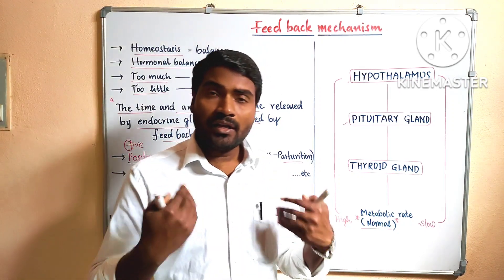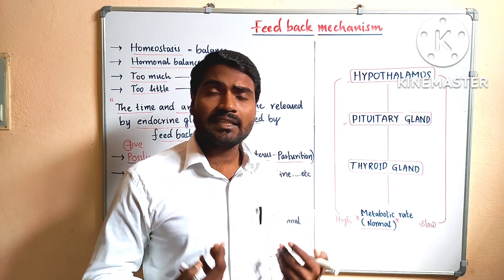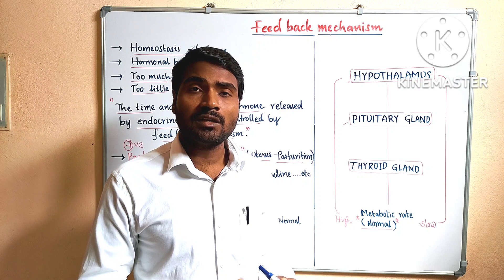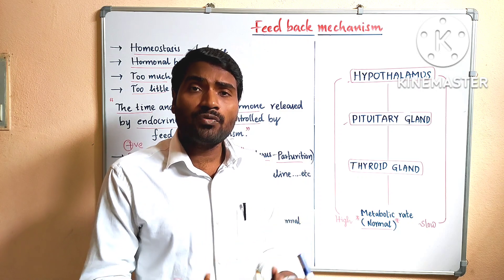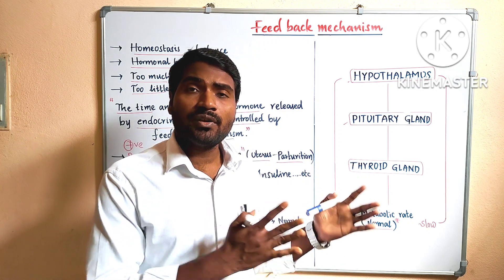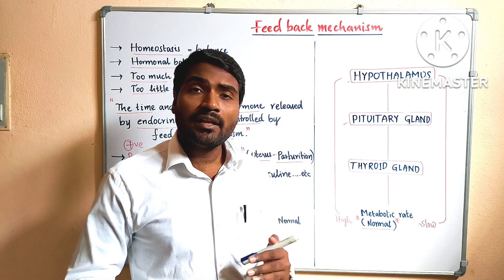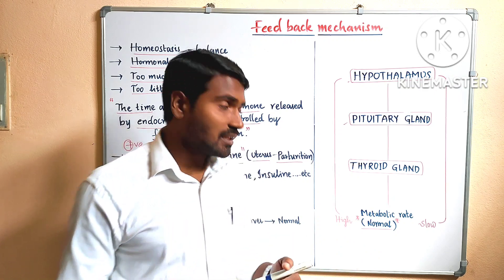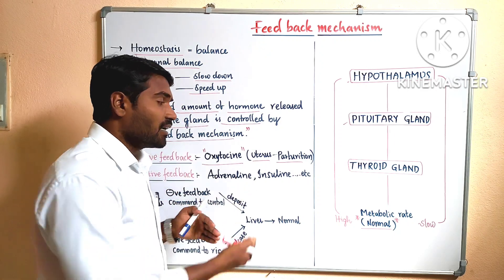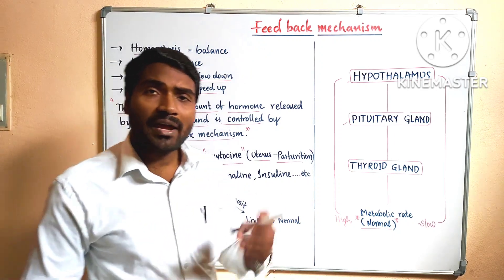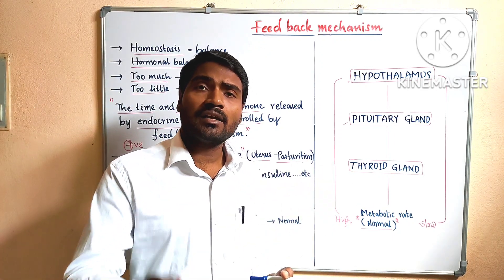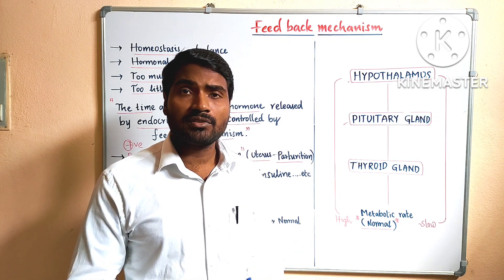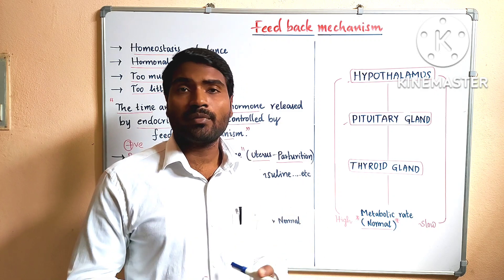In our body, whatever reactions take place — feedback mechanism reactions or hormonal reactions — mostly they are negative feedback mechanism. Most cases, like hormones released by the adrenal gland, pancreas, or any other gland — thyroxine — all these hormones show negative feedback mechanism.